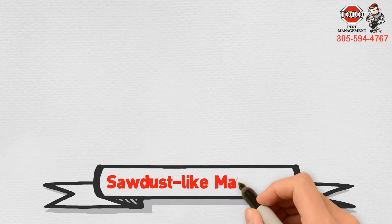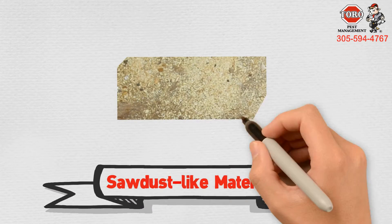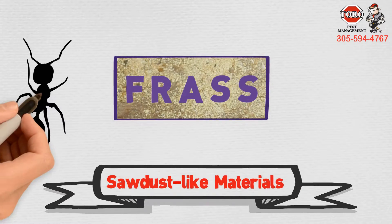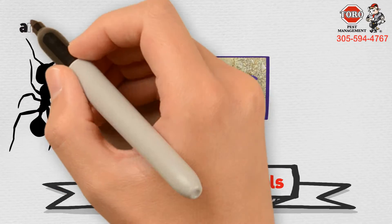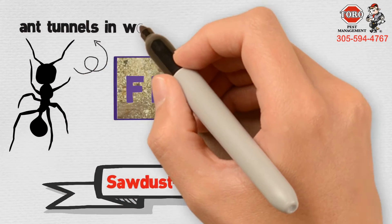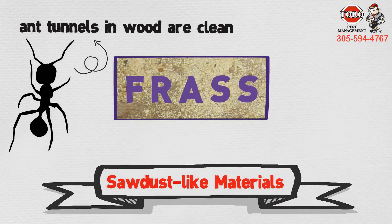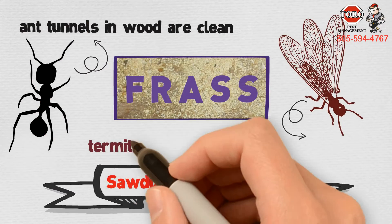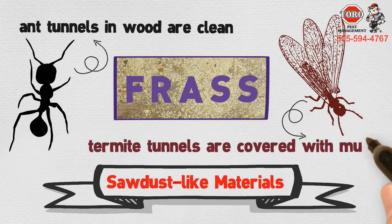Sawdust-like materials known as frass are visible. It should be noted that ant tunnels in wood are clean, while termite tunnels are covered with mud.